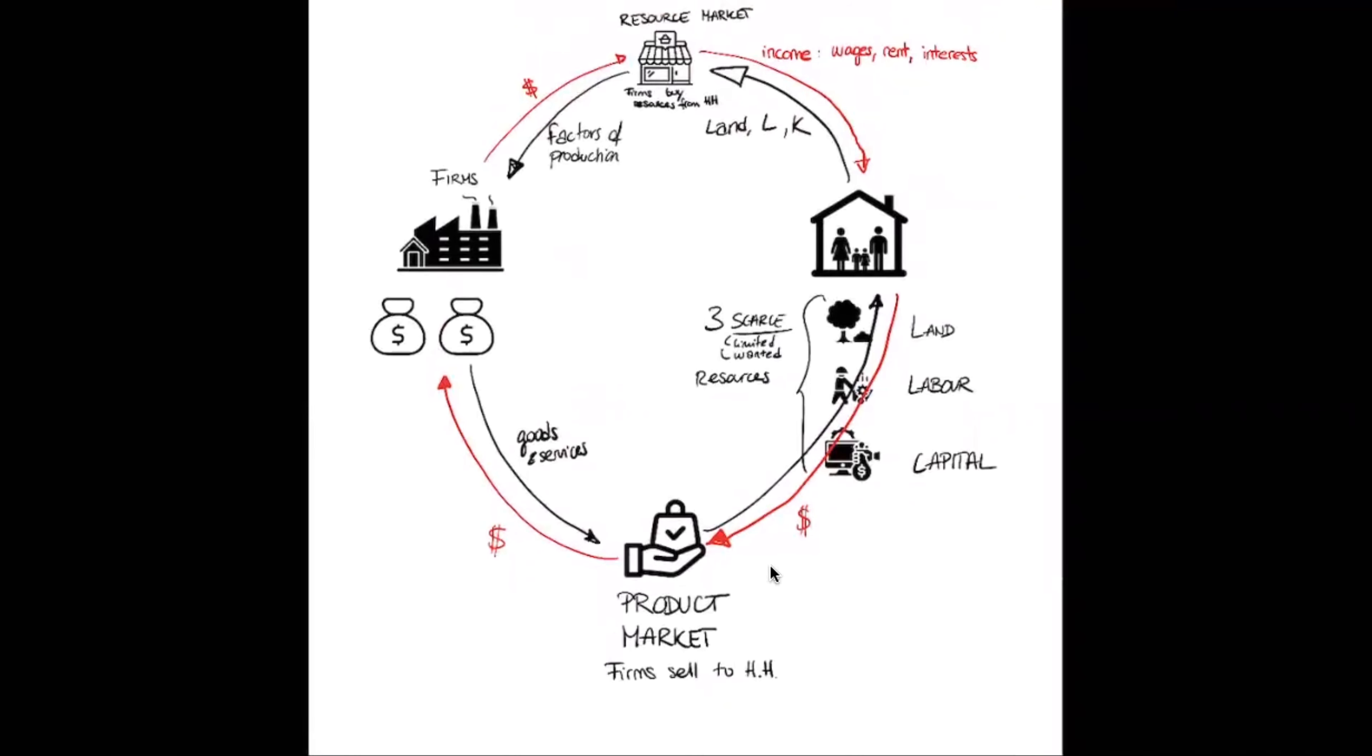You see, the factors of production, they move from the households into the firms. And from there, the firms can offer goods and services to the households. And the households, they buy these goods and services. You see, the money flows clockwise. And the factors of production and the goods and services, the resources, they flow counterclockwise. They don't go in the same direction.